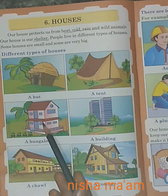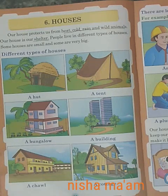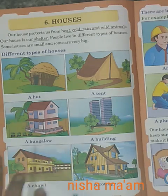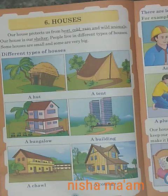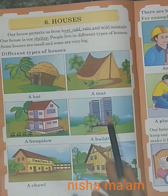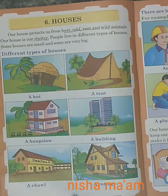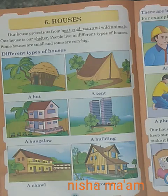फिर, बंगलो। बंगलो means जहां पर उसकी जो छत होती है, वो सीमेंट से बनी होती है। किसी के घर पत्रे वाले होते हैं, किसी के घर नडिये वाले होते हैं। Building — building तो बहुत बड़ी होती है, लंबी सी। उसमें बहुत सारी सीढ़ियां होती हैं, या फिर हमें lift use करनी पड़ती है।